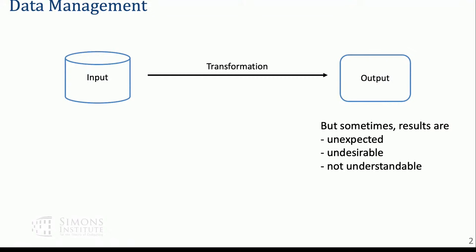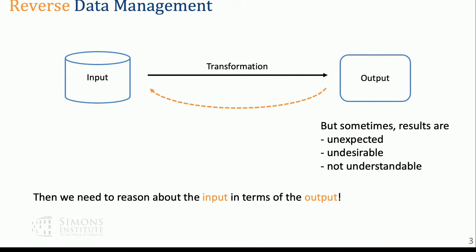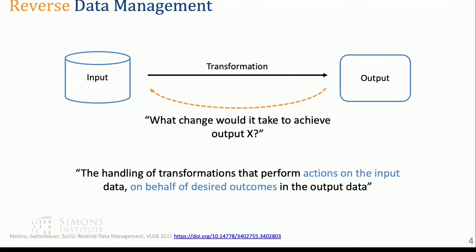What should my input have been to get the output that I wanted? You somehow want to go back in reverse and reason about your input in terms of the output you've gotten and don't understand. This was formalized as reverse data management in 2011 by Alexandra Melio and her collaborators. The idea is to ask: what interventions or changes would you need in the input to get the desired or expected output?